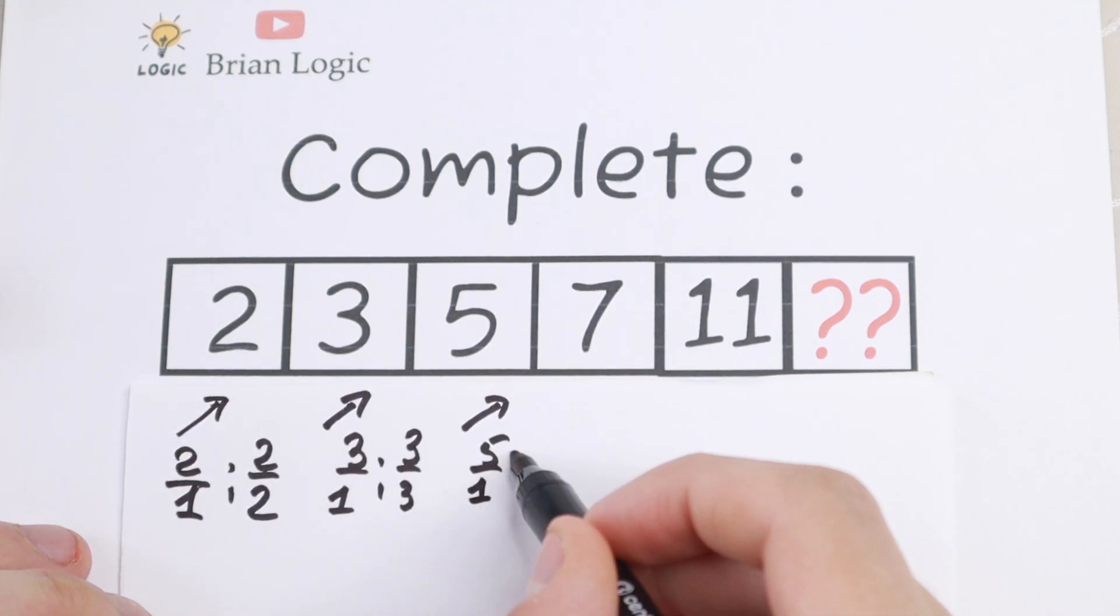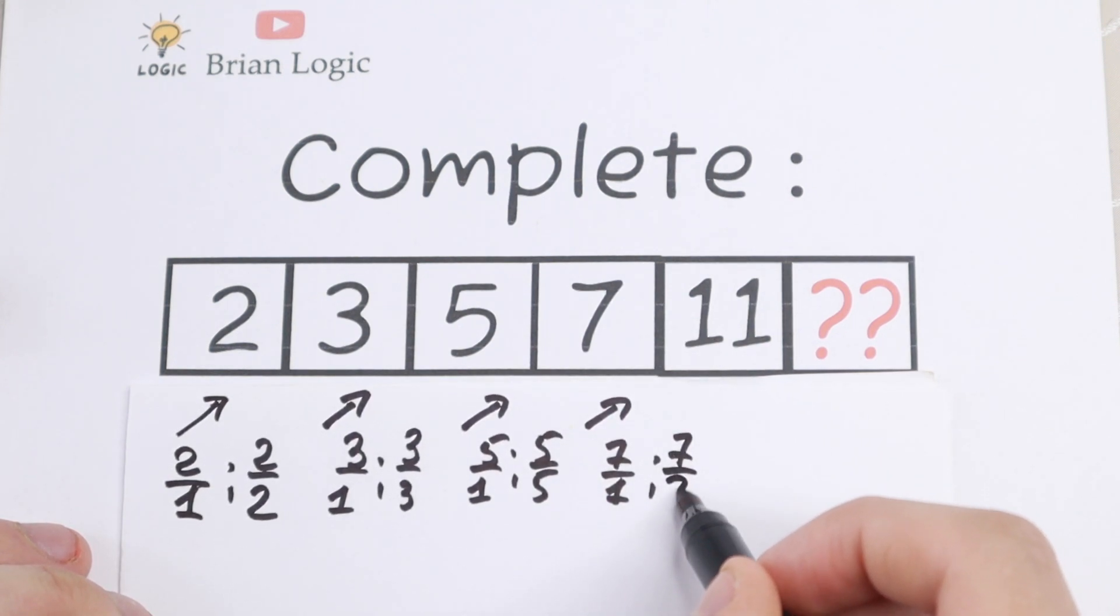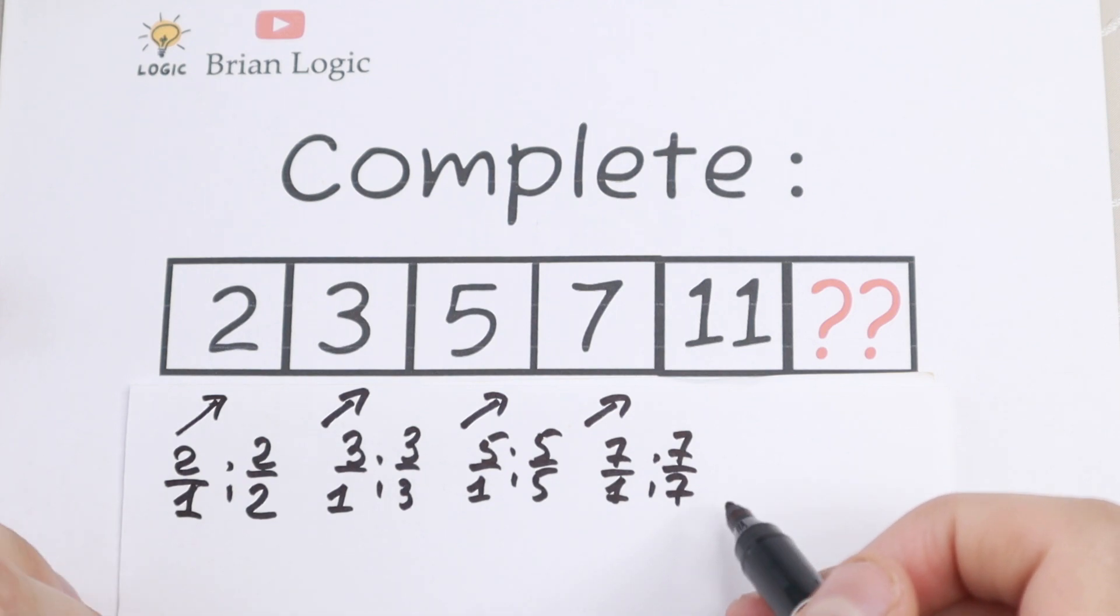This 7 as well: 7 over 1 and 7 over 7. And the same situation will be with this 11.